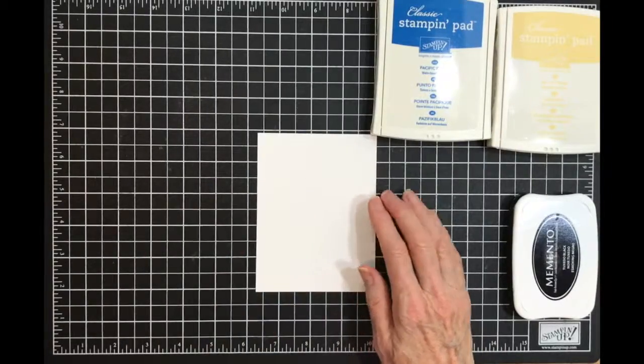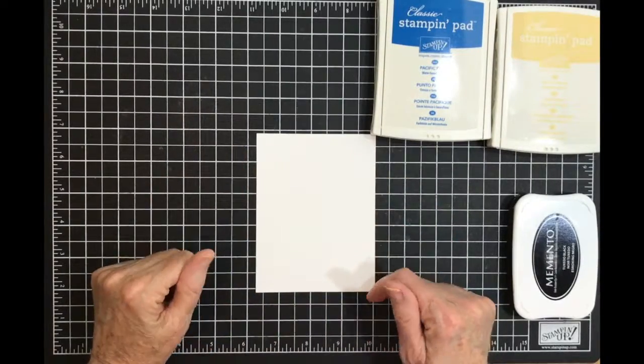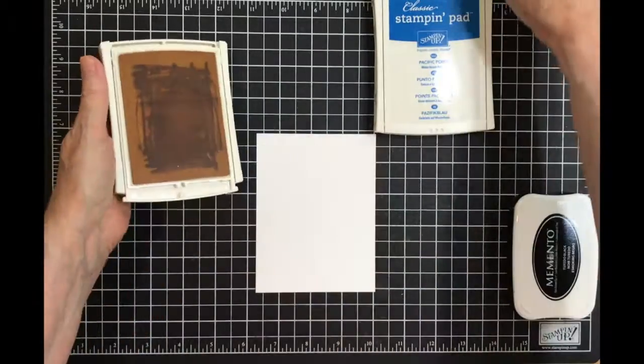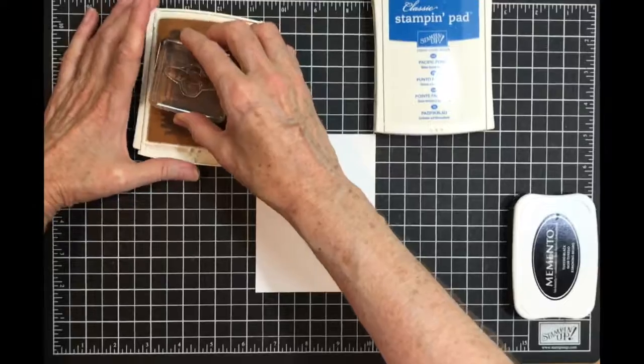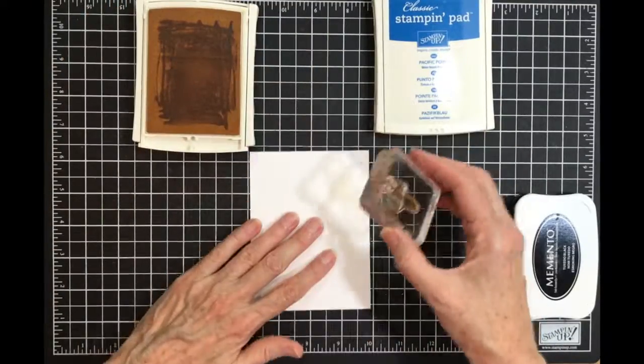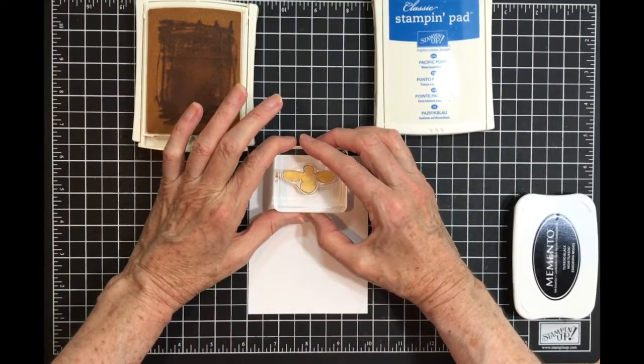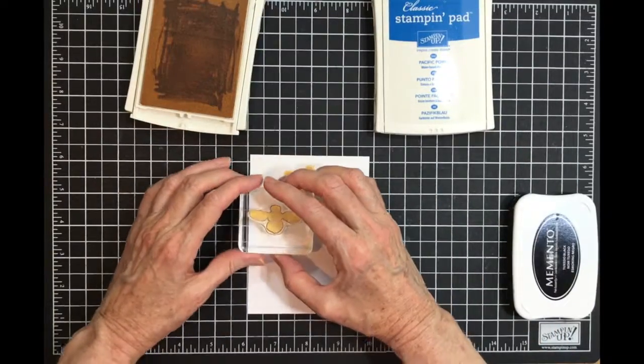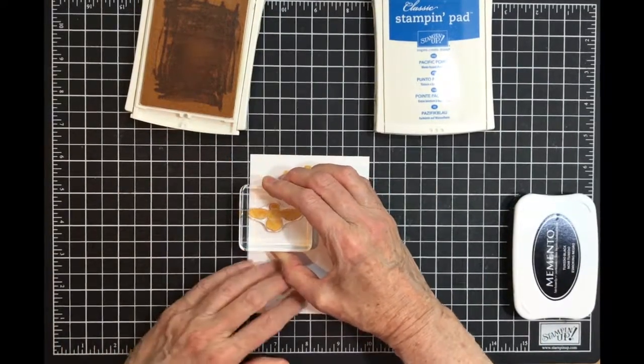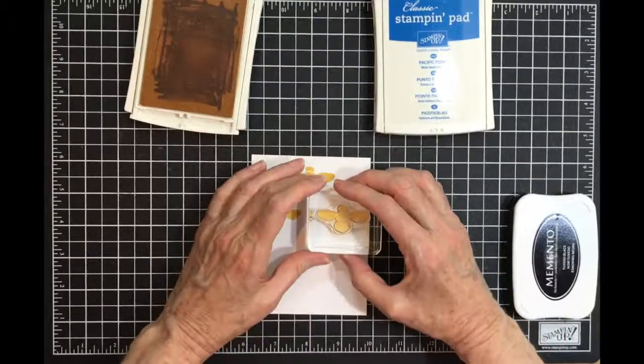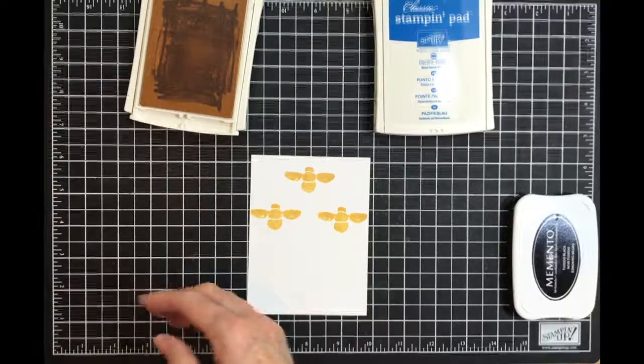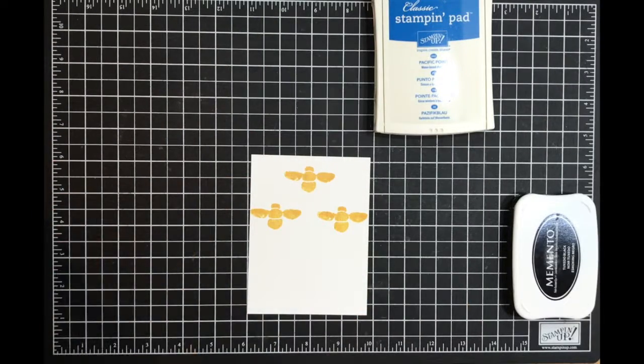Using our Whisper White piece, we're going to be stamping the bees first. So using the So Saffron, I want one bee at the top, one bee on this side, and one bee on this side like so. All right, then I'm gonna take...